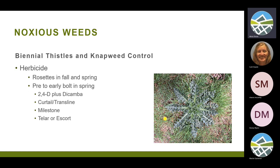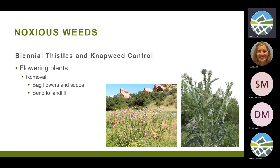For herbicides on biennial thistles and knapweed, options include 2,4-D plus dicamba, or Tordon or Transline — they have the same active ingredient — as well as Milestone, Telar, or Escort. You want to apply in the fall at the rosette stage or in the spring before they start to bolt, or at that very early bolt stage. If they look like they're fully blooming or have any swelling in the flower bud, don't spray them — they're going to die anyway, and those seeds are going to germinate. Spraying at that point kills the foliage but doesn't stop the seed, so you're just wasting materials.